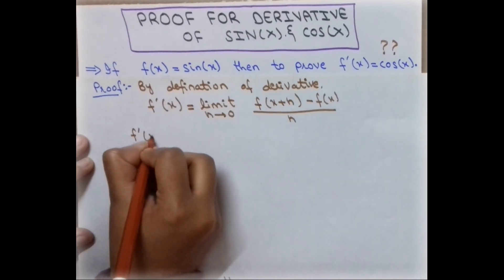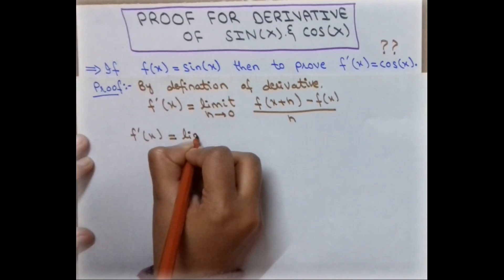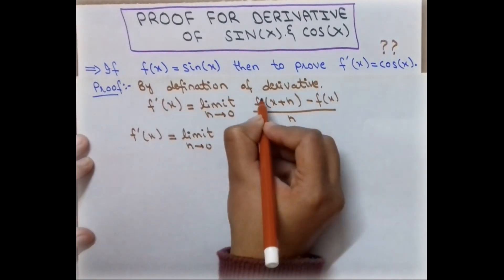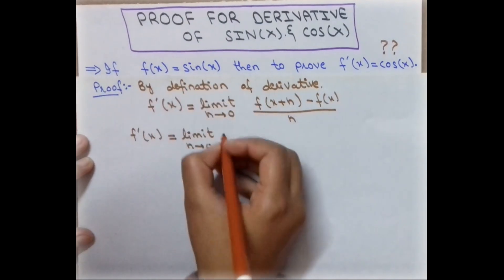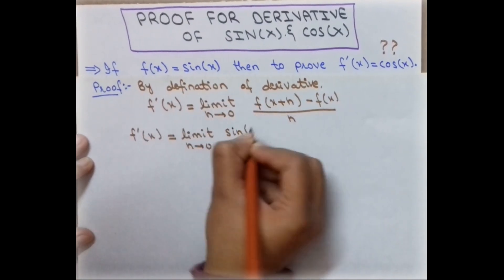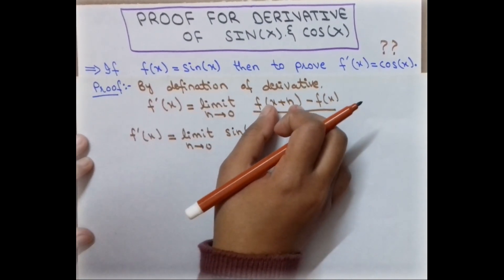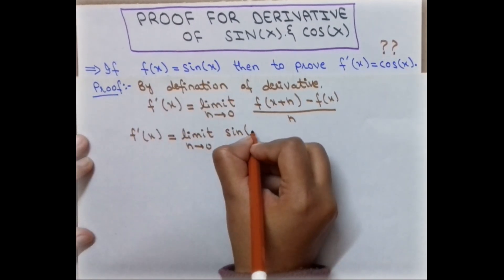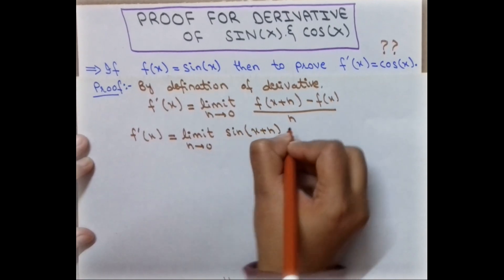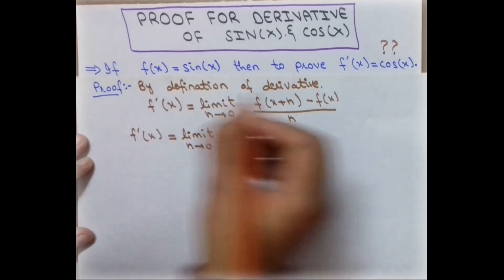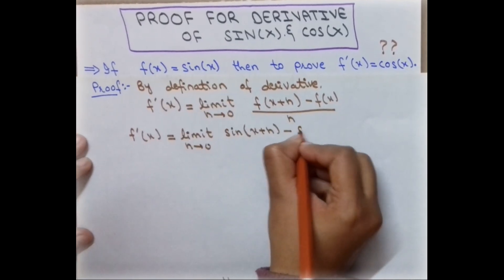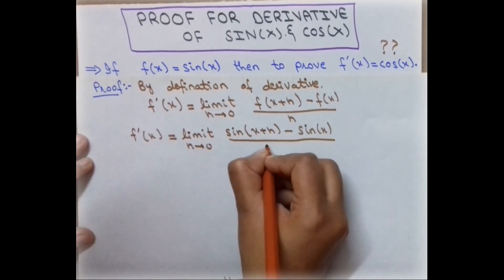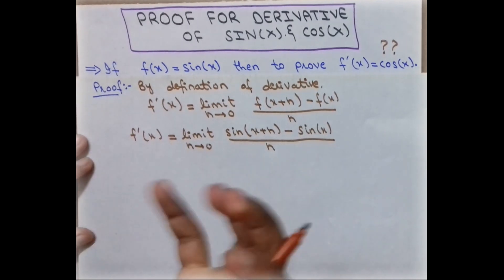Since our function f(x) = sin(x), we write the limit as h approaches zero. We plug (x+h) in place of x, so we write sin(x+h) minus f(x), which is sin(x), all divided by h.